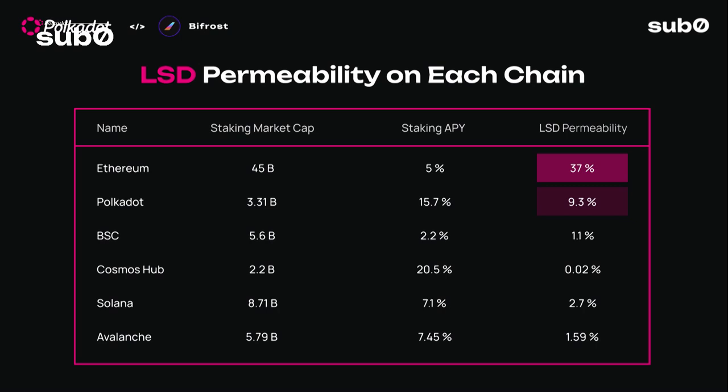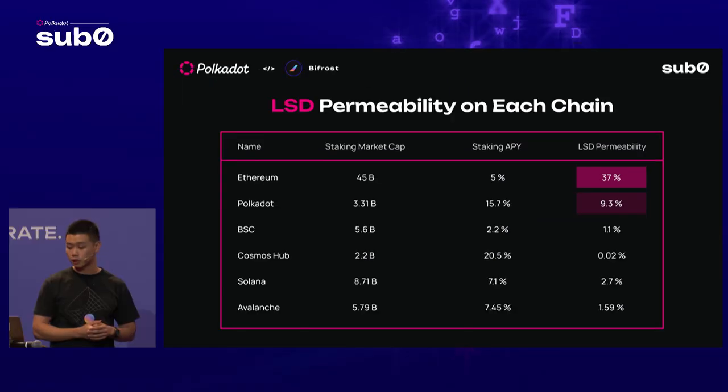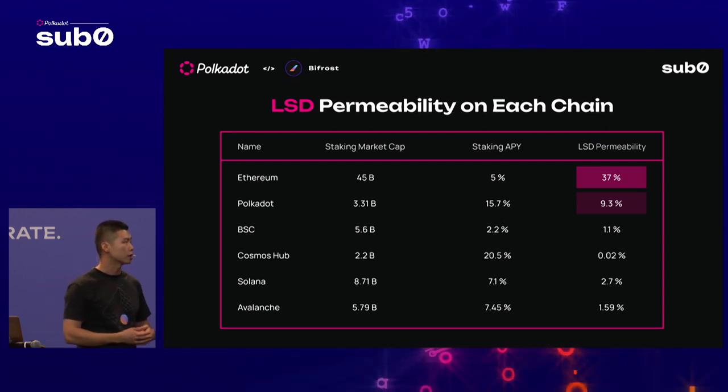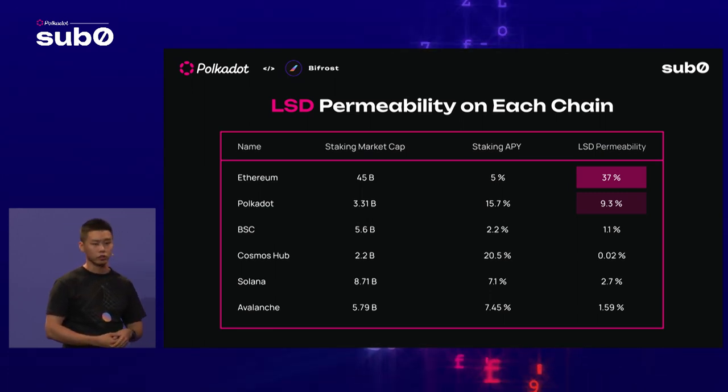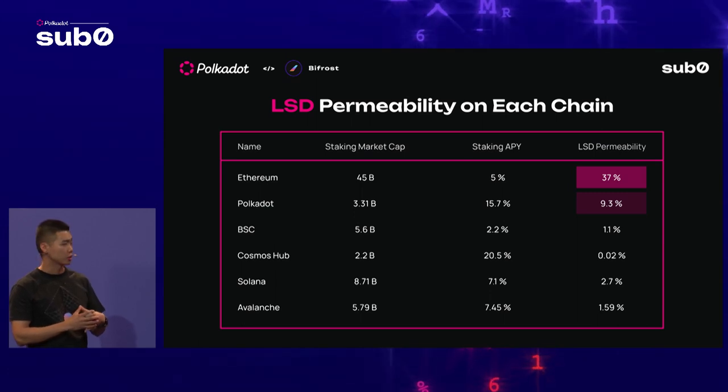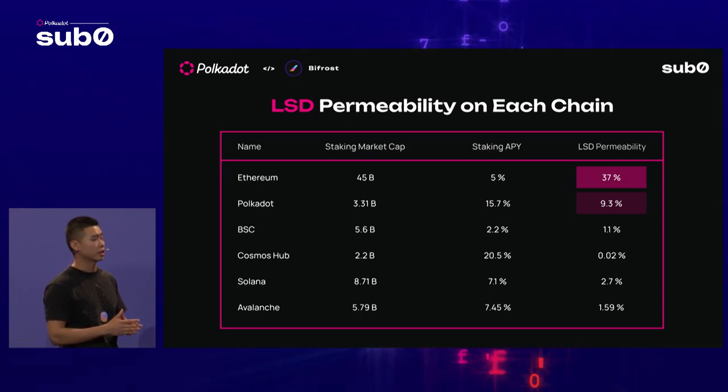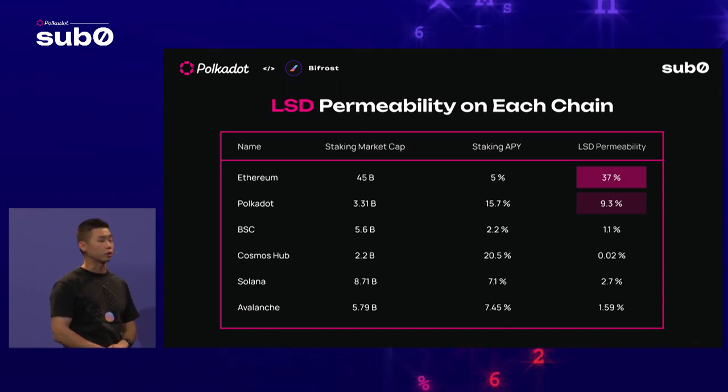There are dedicated AMMs for liquid staking like Curve and Pendle, which do interest rate trading and indexes. If we compare Polkadot to Ethereum and other blockchains, Polkadot might have more potential to see more use cases and applications built on LSD. LSD permeability means the penetration of liquid staking tokens as a share of proof-of-stake. Ethereum has about 45 billion in proof-of-stake with 37% liquid staking penetration.